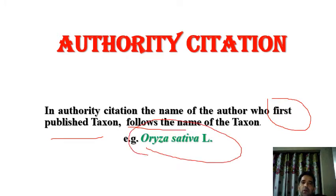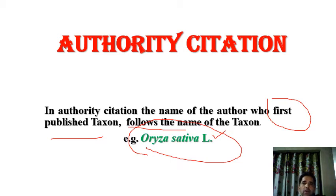For example, Oryza sativa is a rice plant. It was named by Linnaeus. So according to this definition, in authority citation, the name of the author Linnaeus, who first published this taxon, follows the name of the taxon. First comes Oryza sativa and then 'L' for Linnaeus. This L follows Oryza sativa — this is the method of authority citation.